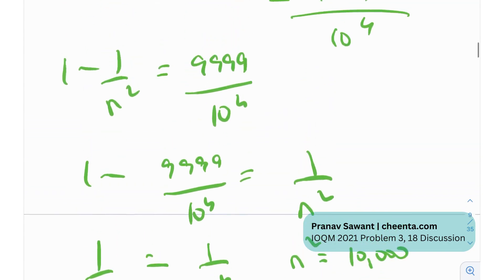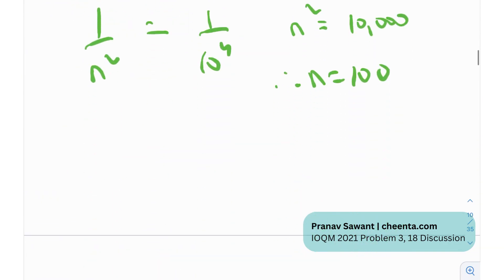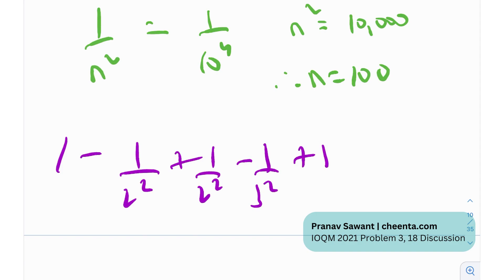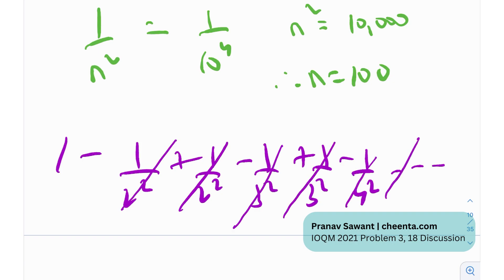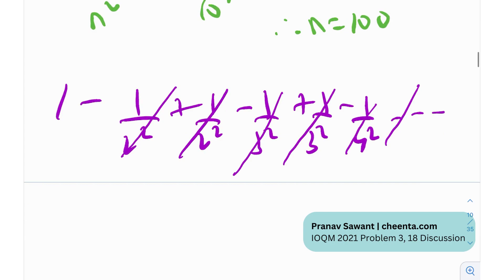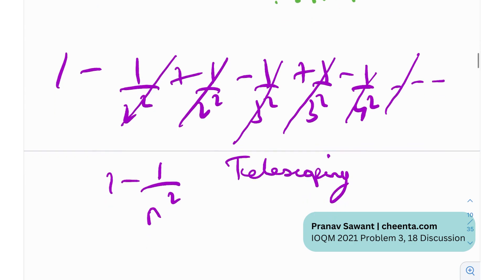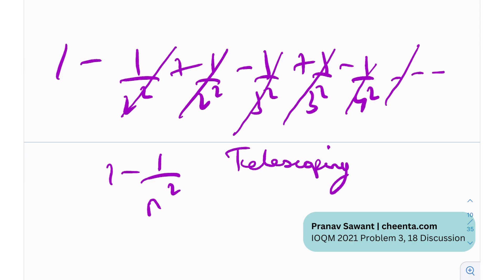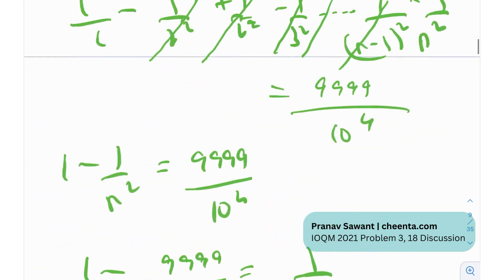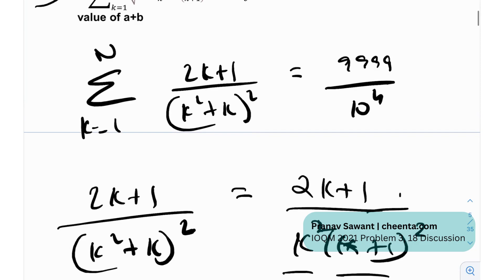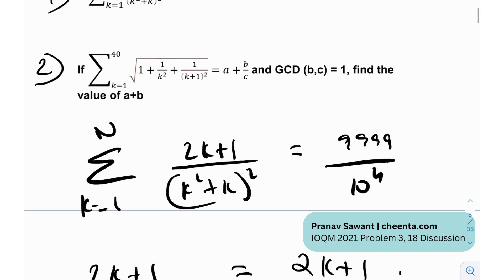This is the concept of telescoping. What's really happening is that in the series 1 − 1/2² + 1/2² − 1/3² + 1/3² − 1/4² and so on, the terms cancel out — minus plus, minus plus — all the way through. In the end, we're left with 1 minus 1/N². This method is called telescoping, and some people call it the VN method as well. Most problems of telescoping are not that hard honestly, and knowing this idea can really fetch you some good marks — two markers possibly in the upcoming IAQM as well.